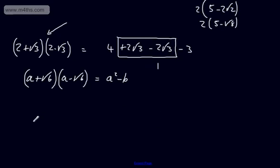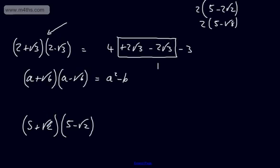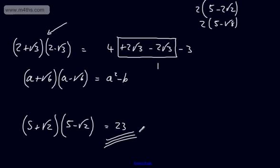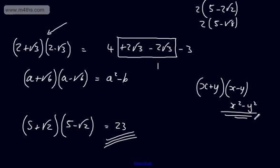Looking at another quick example: 5 plus root 2, multiplied by 5 minus root 2. This is the difference of squares. We get 25 minus 5 root 2 plus 5 root 2 minus 2. The middle terms cancel, so we simply get 25 minus 2, which is 23. You must show full workings in exam questions — this would generally be a 2 to 3 mark question. If you just wrote the answer, you'd probably get 1 mark. In general, x plus y multiplied by x minus y gives x squared minus y squared — that's the difference of squares pattern we'll use when rationalising denominators.